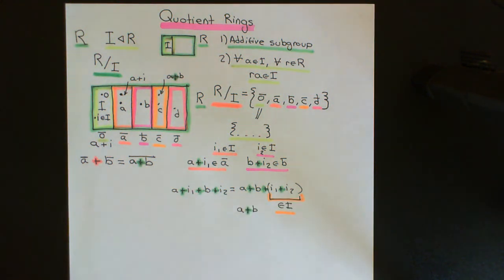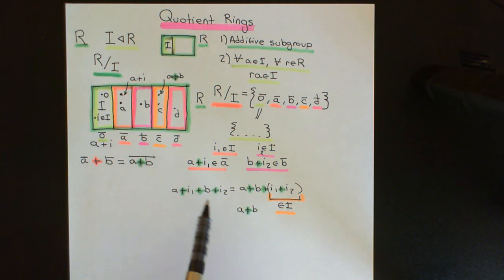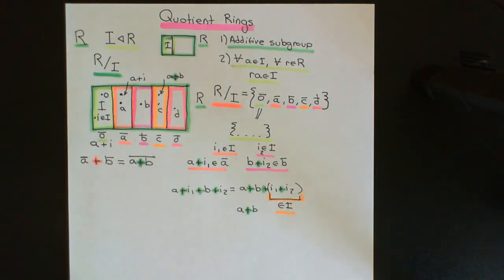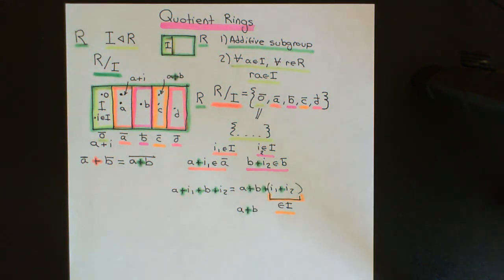So what we have is A plus B plus some element of the ideal, which is exactly of the form that lies in the same coset as A plus B. Therefore both people conclude that the answer in terms of cosets is exactly the same, even though they got different elements in the ring. Those elements are in the same coset, so their overall answer in the quotient ring is identical. Indeed, addition is well-defined.